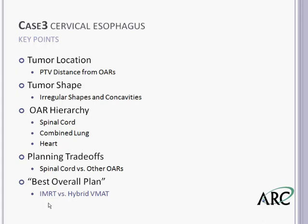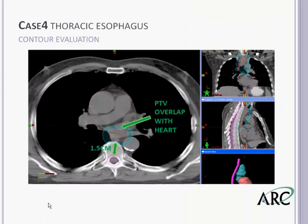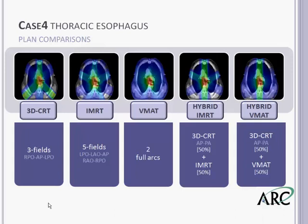The final patient is a 65-year-old male who presented with a three-month history of dysphagia and new weight loss. An endoscopy revealed a semi-circumferential mass from five centimeters distal to the upper esophageal sphincter and extending eight centimeters. Endoscopic biopsy was positive for moderately to poorly differentiated squamous cell carcinoma. The tumor was very midline, with some overlap with the heart and the greater vessels. Looking from left to right: a three-field technique comprising an AP field with LAO and RPO; a five-field IMRT; two full arcs for VMAT; an AP/PA and IMRT hybrid; and finally an AP/PA and VMAT hybrid.